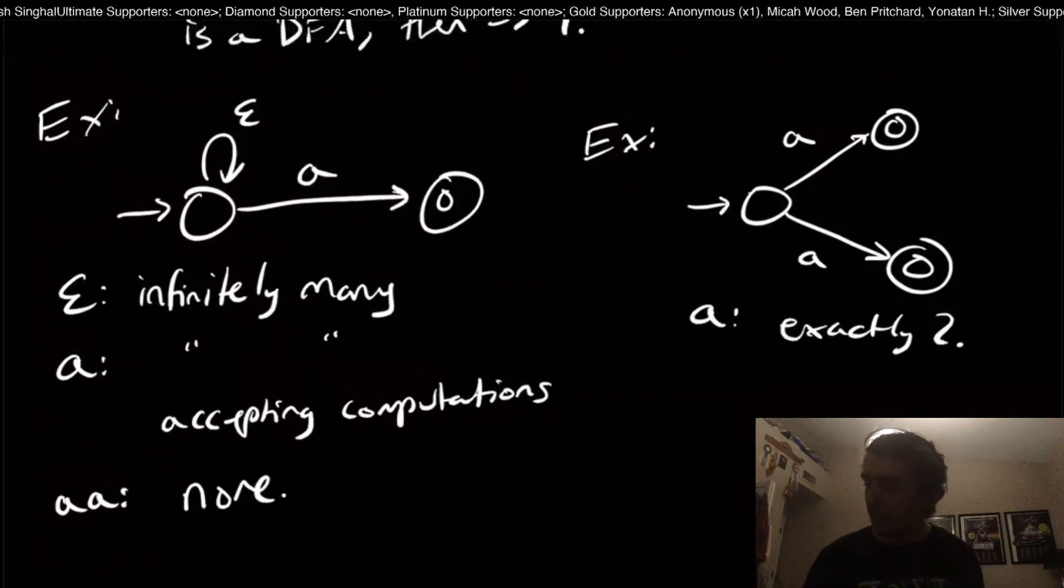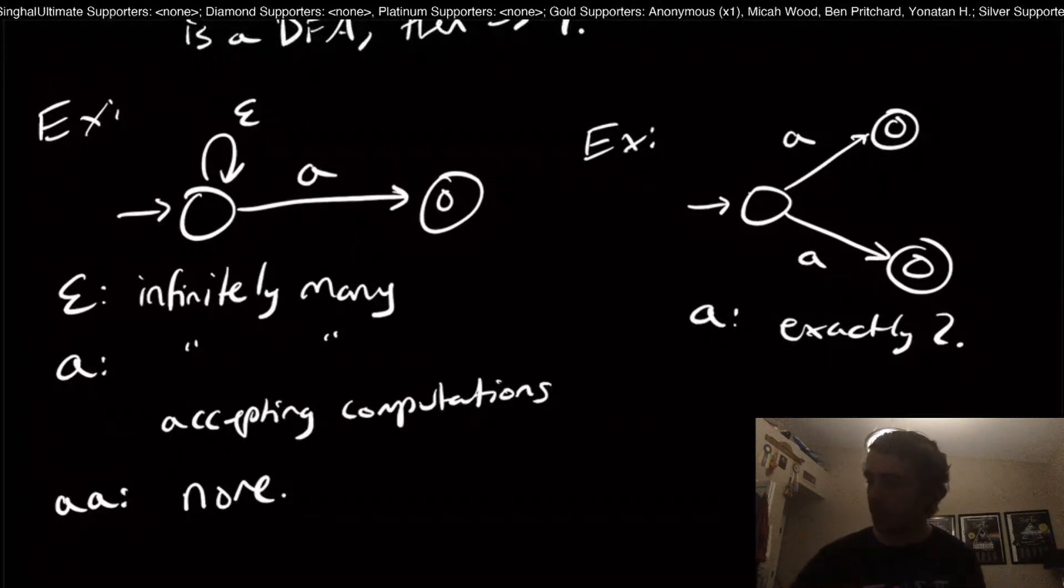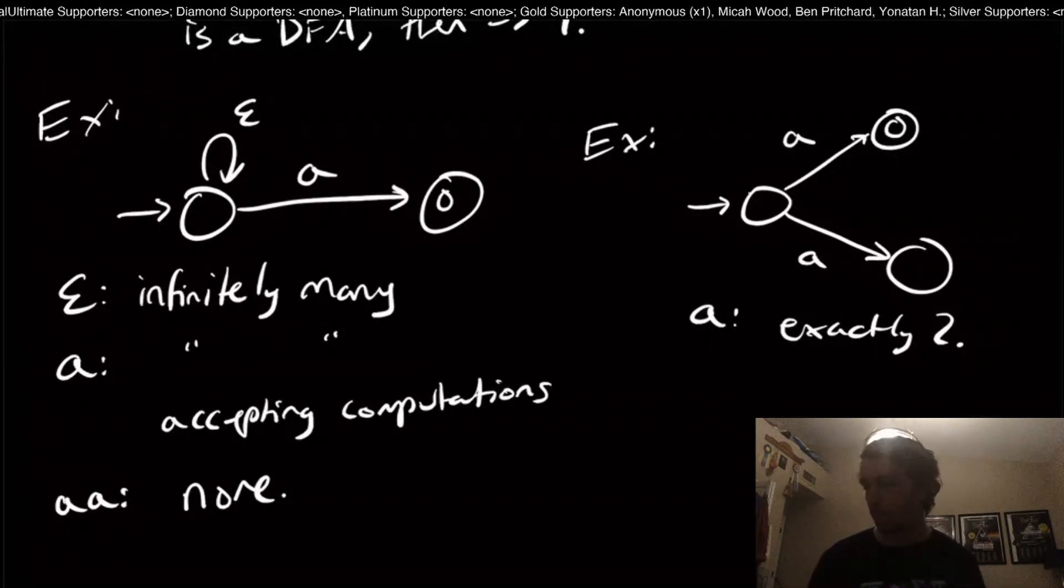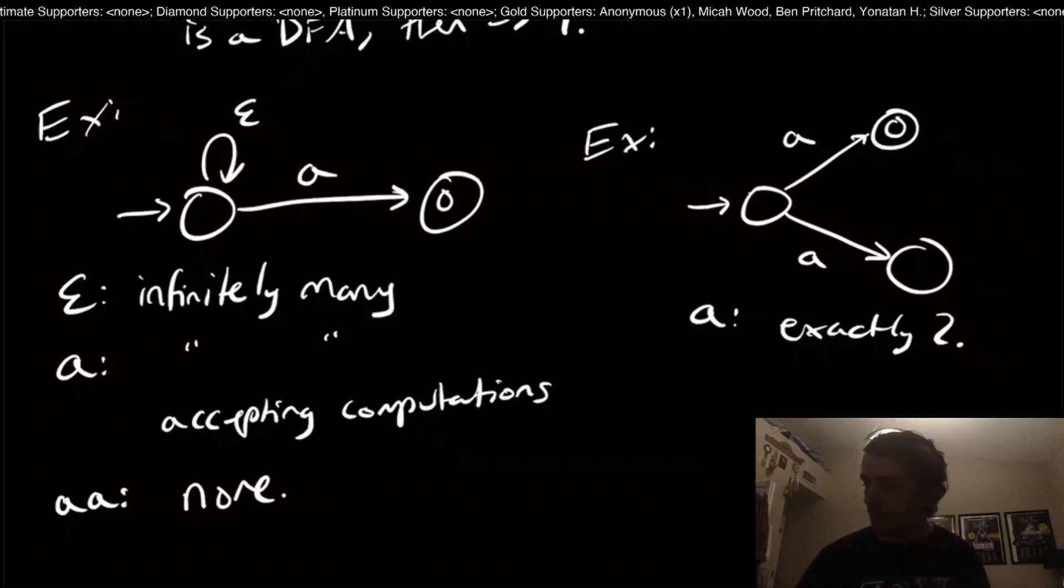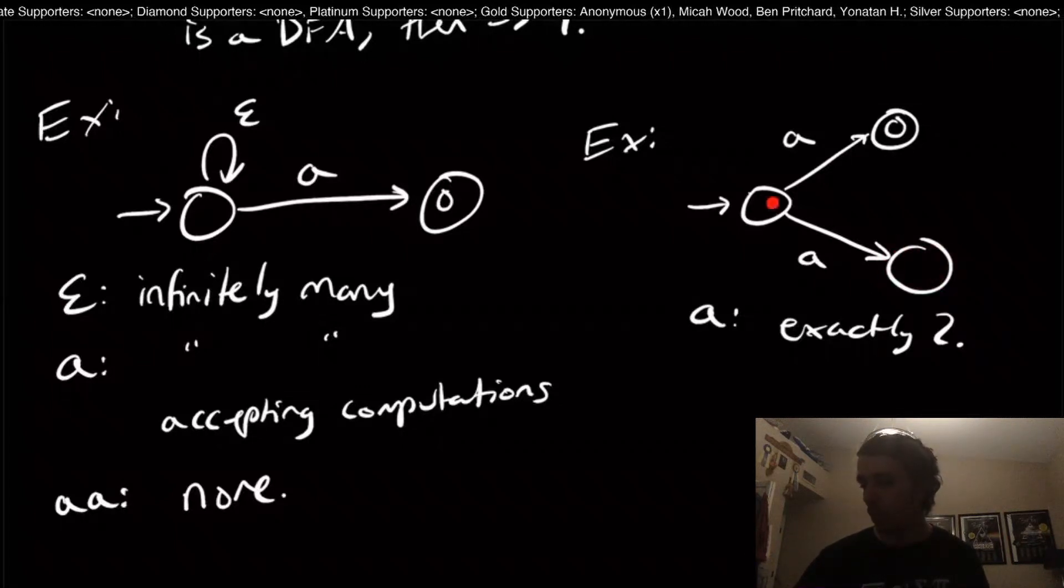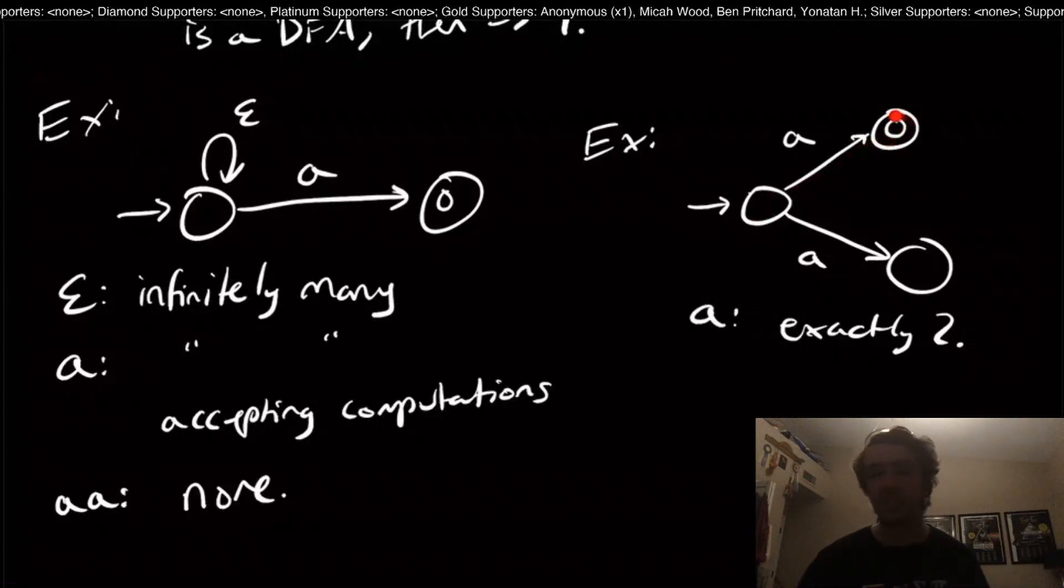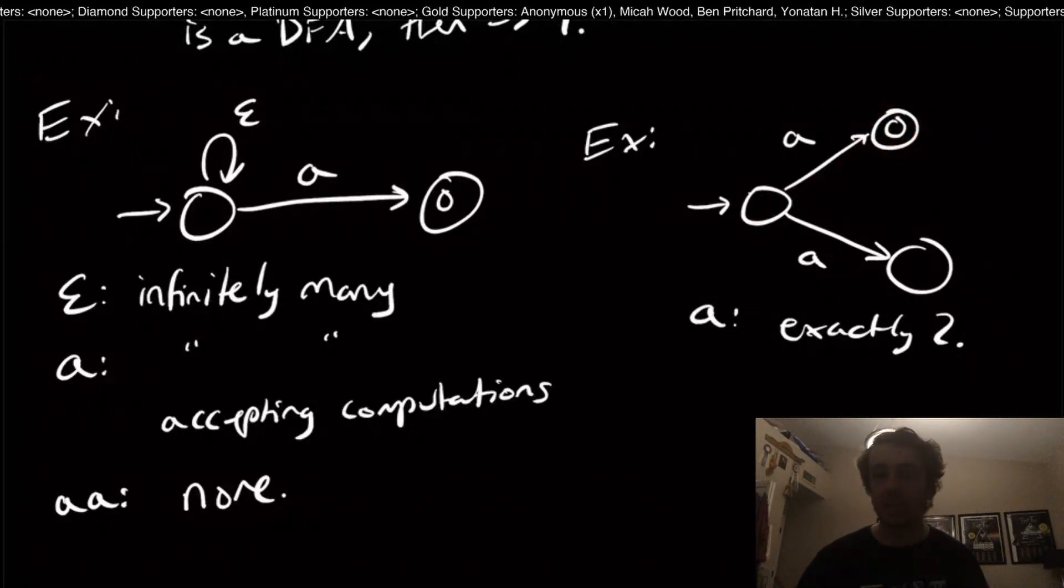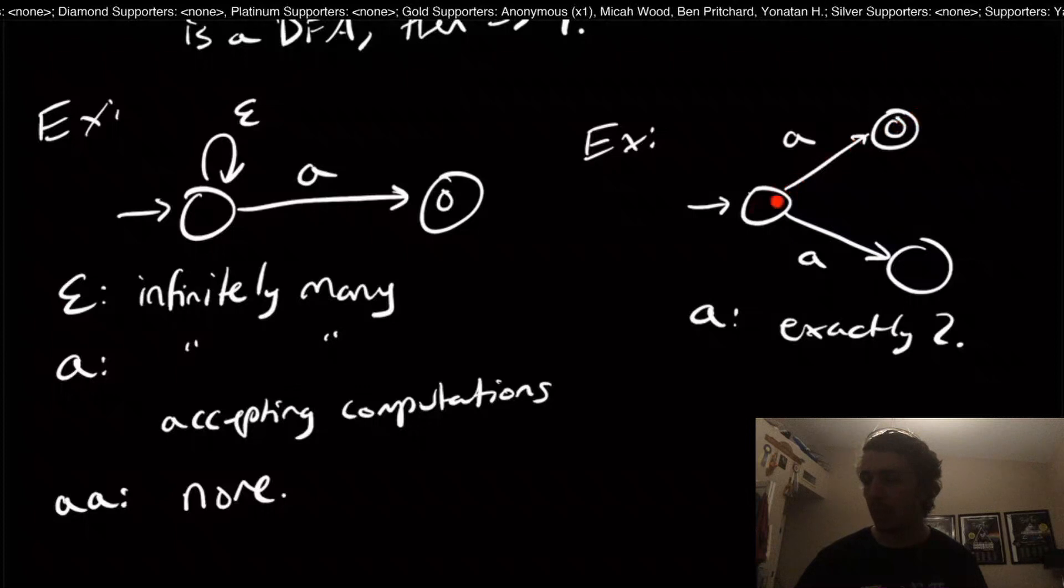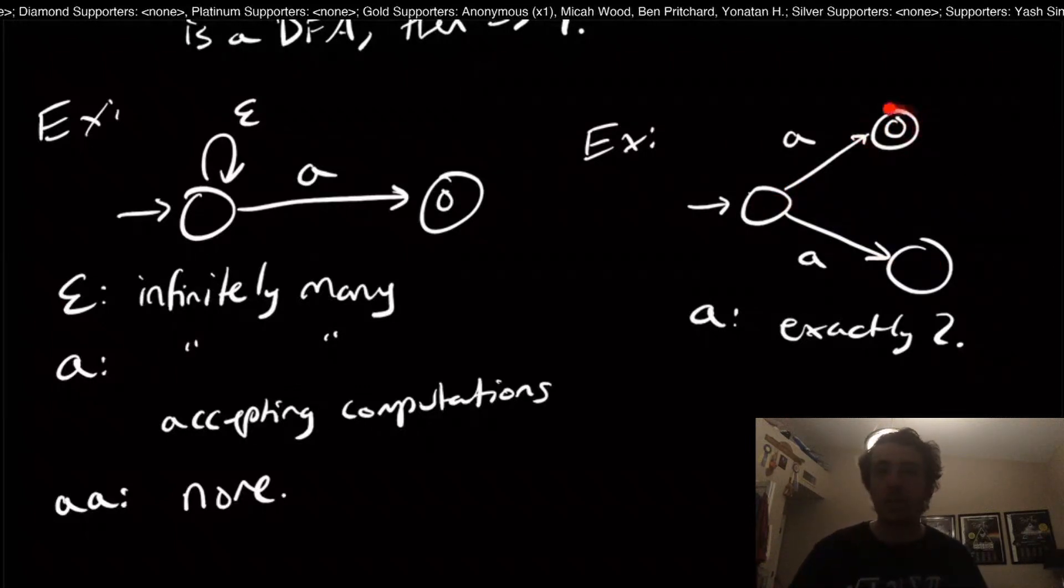But there's something quite interesting here. What if I made this state not final? If I made this state not final, A is still accepted because there's a choice that allows us for the string A to be accepted, namely this one up here. If I chose this one, then I won't accept. But if I chose this one, then we accept.